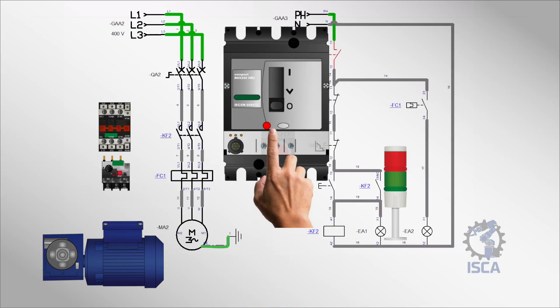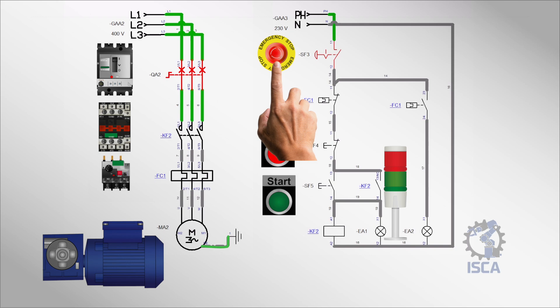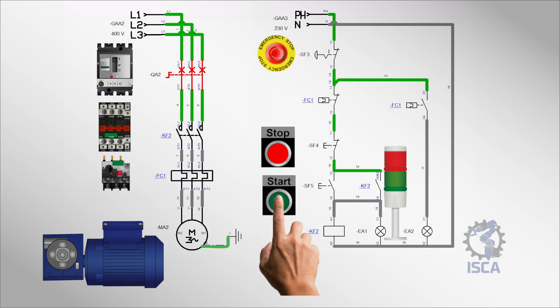The circuit breaker is closed, allowing power to reach the rest of the circuit. When the start button is pressed, the magnetic contactor is energized, closing its main contacts and connecting the motor to the power supply.